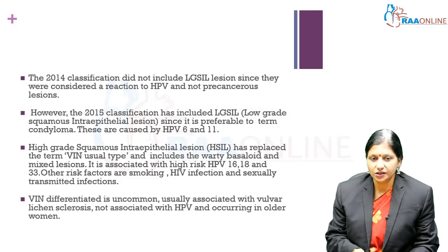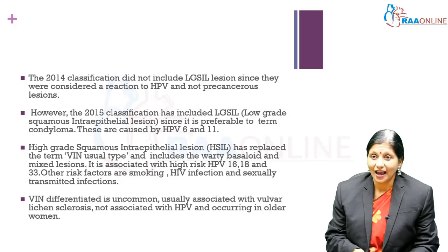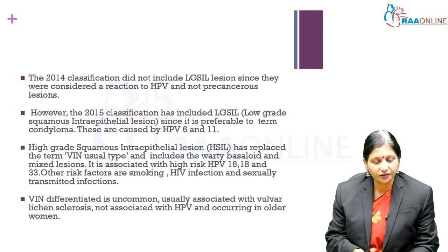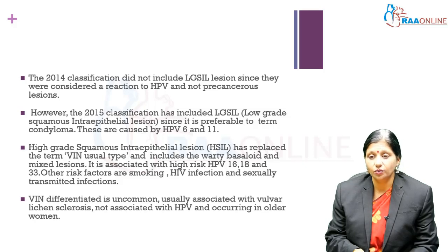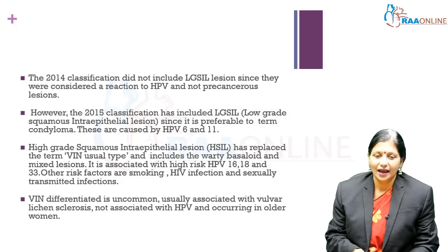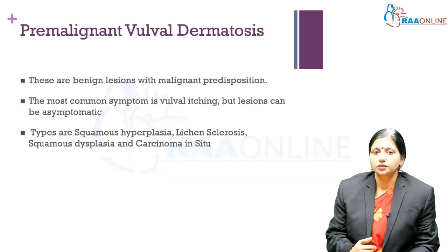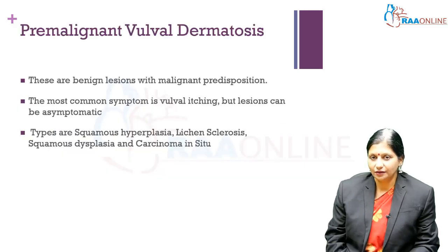The third type of vulval intraepithelial neoplasia occurs in white postmenopausal women and is a disease of the seventh decade. It is not associated with human papilloma virus and arises in a background of lichen sclerosis or lichen planus. This type produces squamous cell carcinomas of the keratinizing variety of carcinoma vulva. There are also other premalignant vulval lesions which can predispose to vulval cancers.